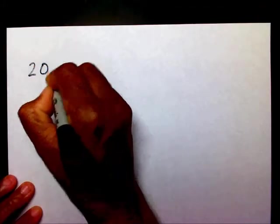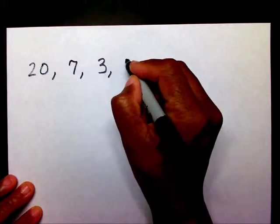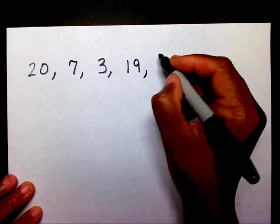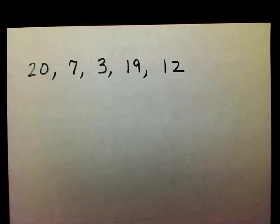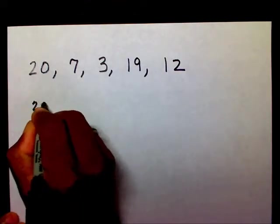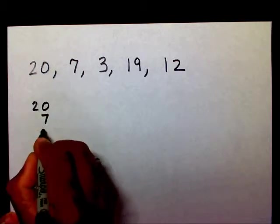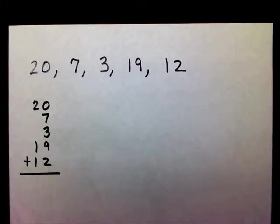20, 7, 3, 19, and 12. Well, first thing I want to do is add all of my numbers. So this time when I add them, I'm going down: 20 plus 7 plus 3, 19, and 12. I'm going to add all of my numbers. When I add all of my numbers, I'm going to end up with 61.